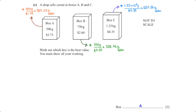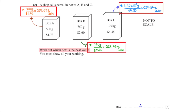A shop sells cereal in boxes A, B, and C. Work out which box is the best value, showing all working. We divide the mass of each box by its cost. From these values, box A gives the highest amount of cereal per dollar, making it the best value.